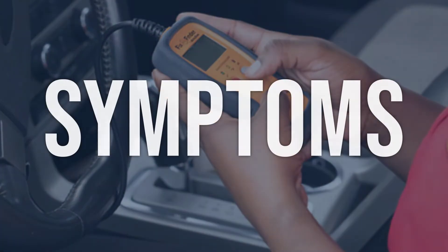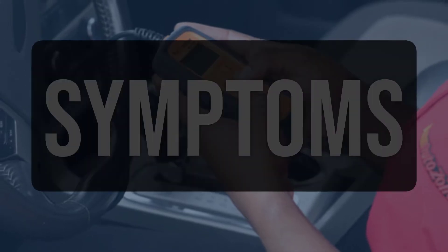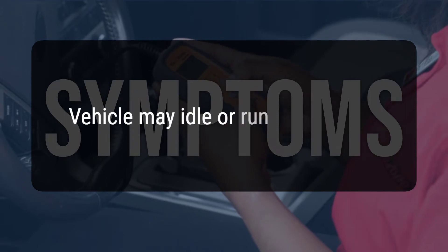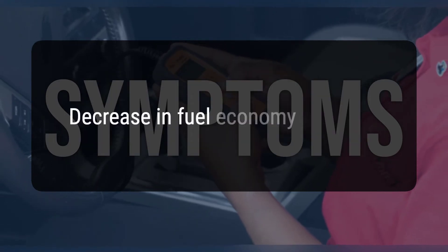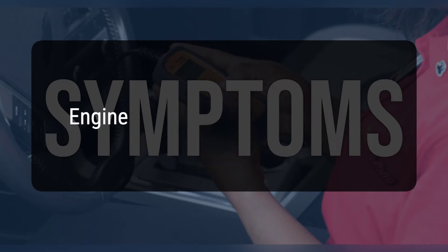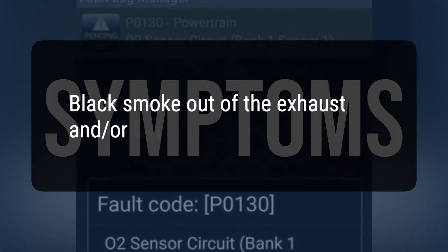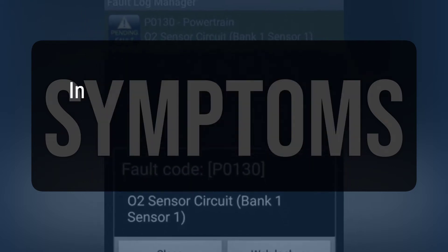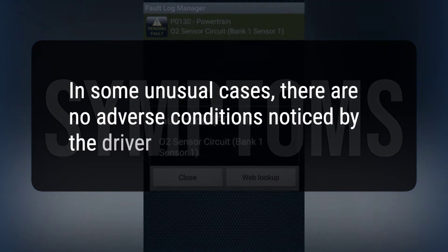When you encounter this OBD error, the vehicle typically exhibits the following symptoms: 1. Check engine light will illuminate. 2. Vehicle may idle or run rough. 3. Decrease in fuel economy. 4. Engine dies. 5. Black smoke out of the exhaust and/or bad smelling exhaust. 6. In some unusual cases, there are no adverse conditions noticed by the driver.